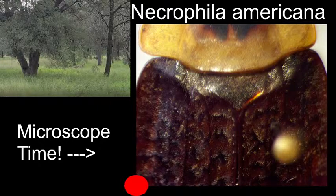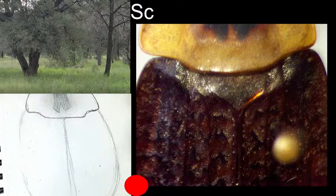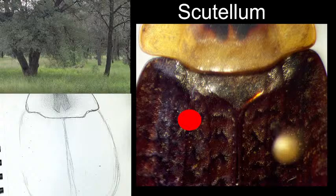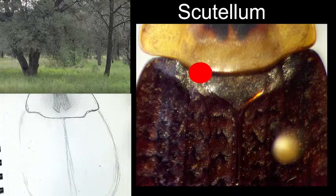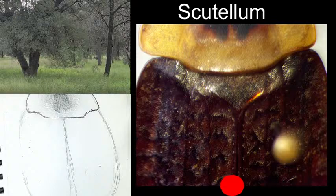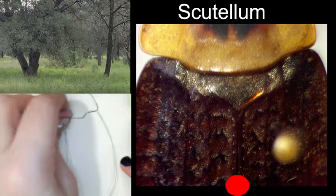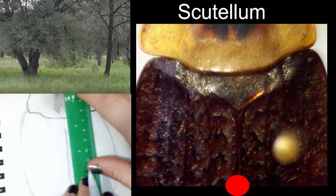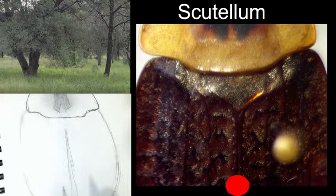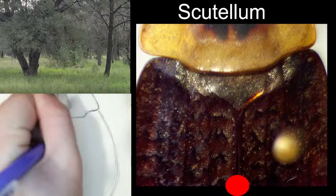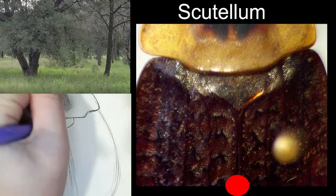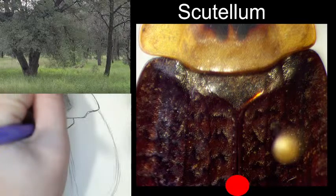All right, look at that scutellum — this is how we spell it: scutellum. It's this triangular plate right here behind the pronotum. There's this angle down and a triangle over — that is our scutellum, kind of in between the wings here. I want to make sure I'm staying true to the center line, and that's where the tip of the scutellum goes — it comes up at an angle like this.